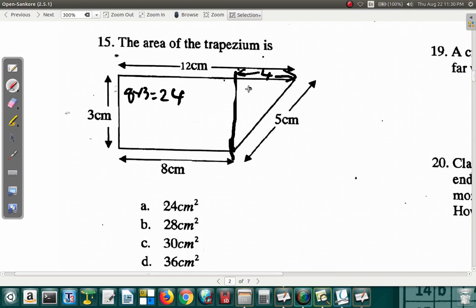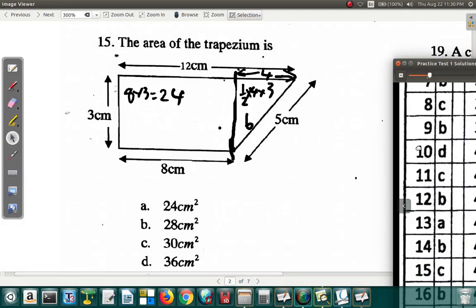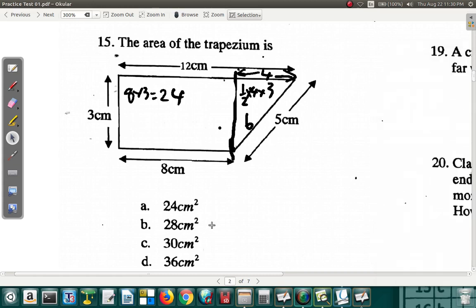The area of this is half base, half of 4 times the height of 3. Half of 4 is 2, times 3 is 6. So when you add up 24 and 6, you're going to get 30. Question 15, C, which is 30. We'll continue from that point and move on later.